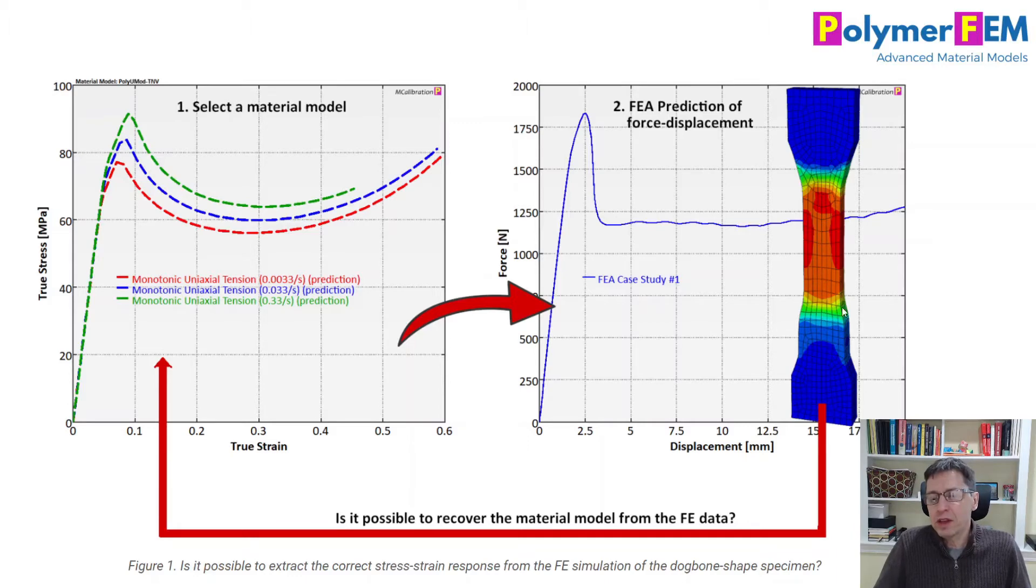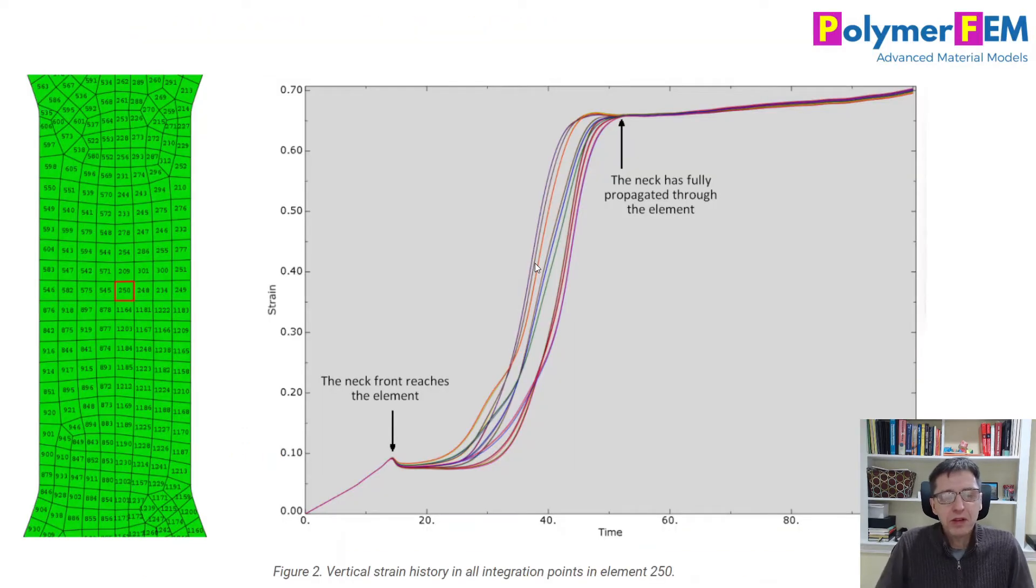You can see from the specimen here is that it's a 3D specimen. It has a certain thickness to it, and it has a width here. This was performed in Abaqus Standard using C3D20 elements. When I run this, I have to pick one element or multiple elements to study.